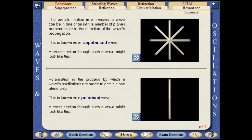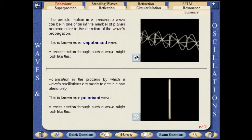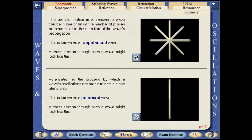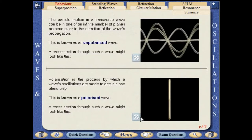The particle motion in a transverse wave can be in one of an infinite number of planes perpendicular to the direction of the wave's propagation. This is known as an unpolarised wave.